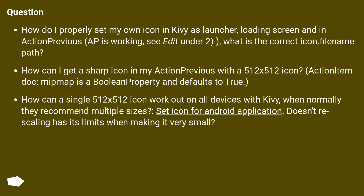Question: How do I properly set my own icon in Kivy as launcher, loading screen, and in action previous? The app is working — see edit under 2. What is the correct icon file path? How can I get a sharp icon in my action previous with a 512x512 icon? How can a single 512x512 icon work on all devices with Kivy, when normally they recommend multiple sizes?